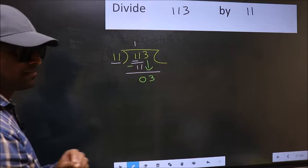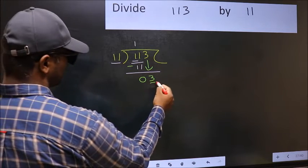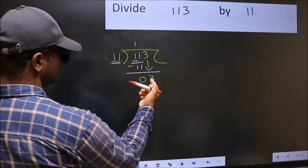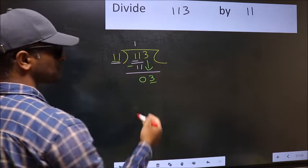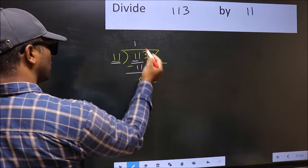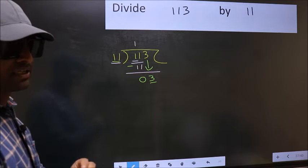After this step, the mistake happens. And the mistake is this: here we have 3 and here 11. 3 is smaller than 11. So what many do is, they directly put dot and take 0, which is wrong.